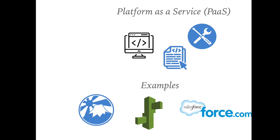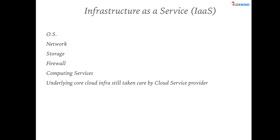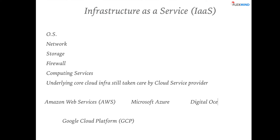Infrastructure as a Service is the most interesting but complex service model. In this model, the consumer can access the operating system, network, storage, firewall, and computing services, and is able to run and deploy arbitrary software including applications and even the operating system itself. The underlying cloud infrastructure is still managed by the cloud service provider. Examples include Amazon EC2 and the broader AWS, Google Cloud Platform, Microsoft Azure, DigitalOcean, and Rackspace.